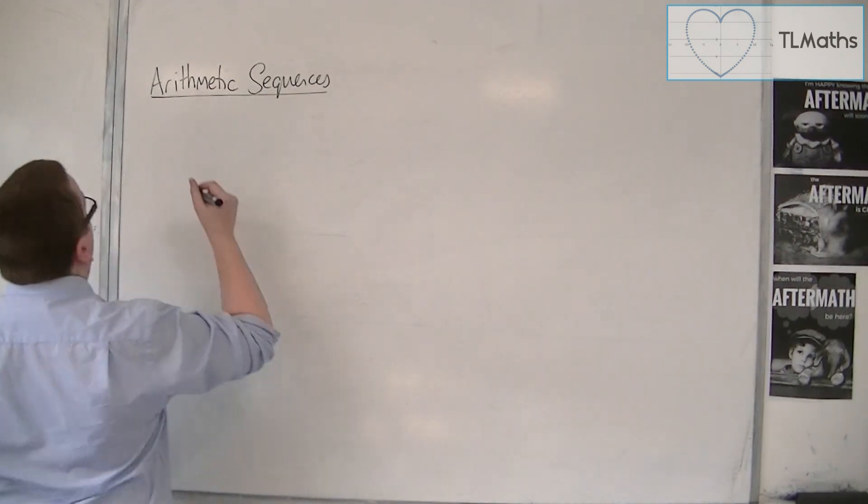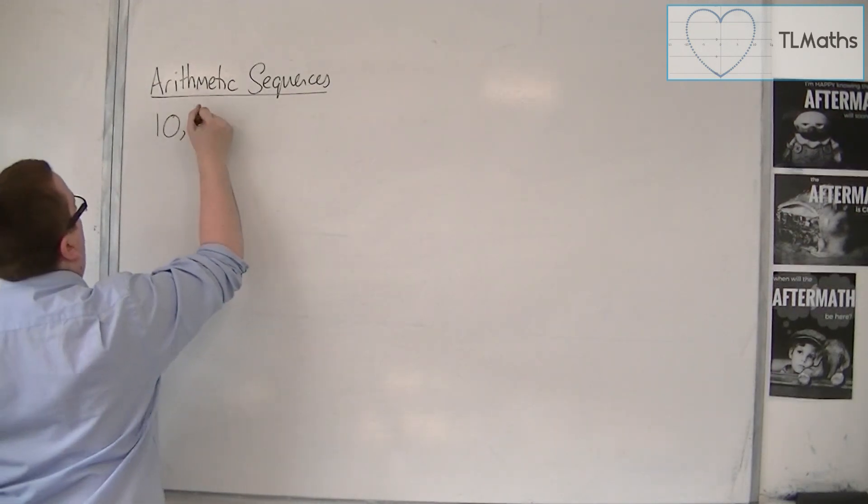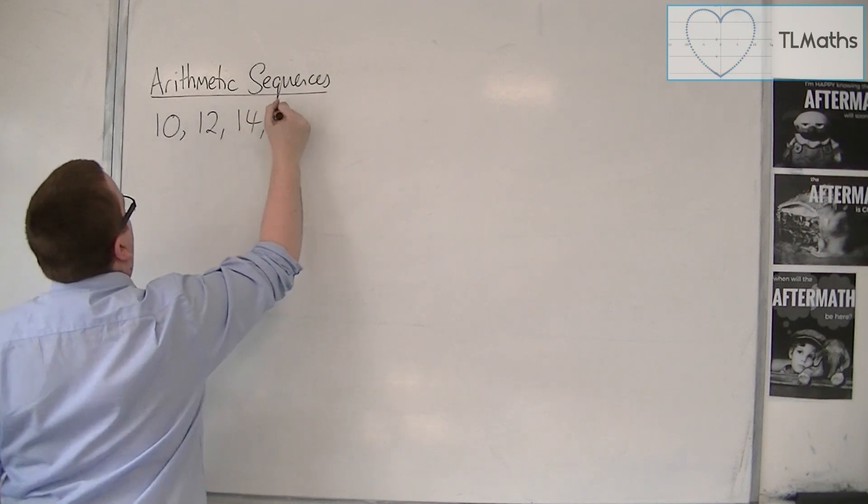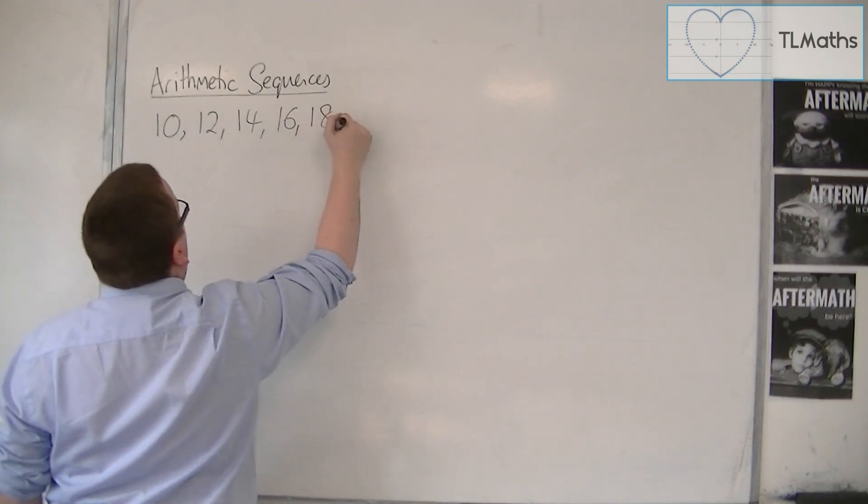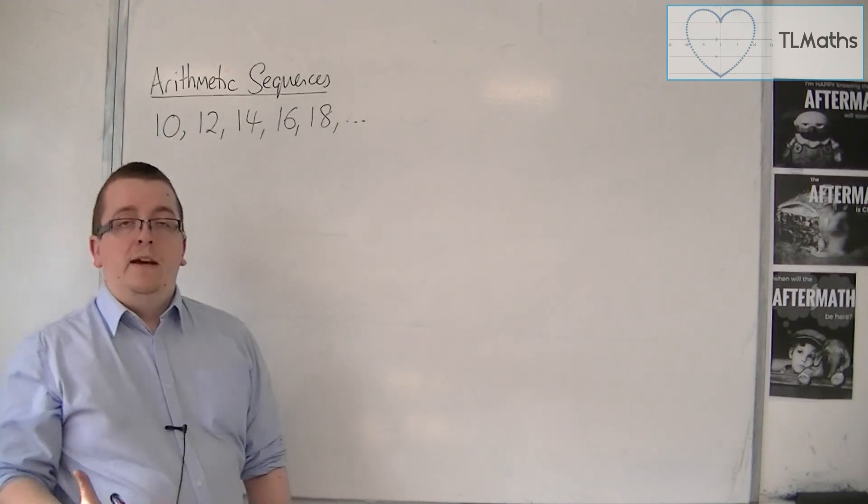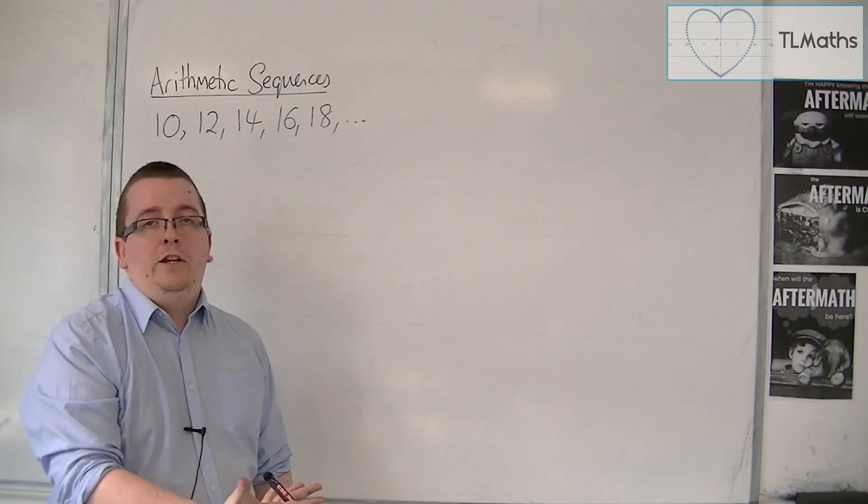So for example, 10, 12, 14, 16, 18 and so on is an arithmetic sequence because I'm adding on 2 each time.